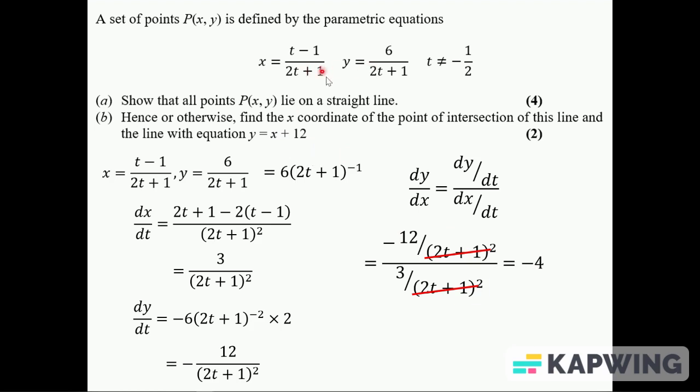Just subbing t is equal to 0, I think that's probably the easiest just to find a point that the line lies on, giving me x is equal to minus 1 and y is equal to 6. And then if we use y equals mx plus c, it tells me that c is equal to 2.